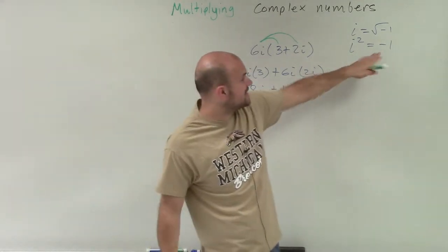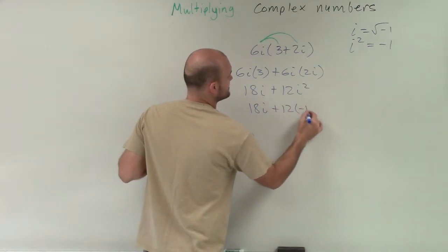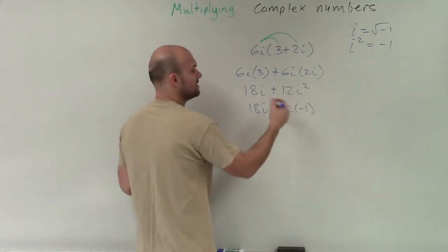Remember, we rewrite i squared as negative 1. So this is 18i plus 12 times negative 1. 12 times negative 1 is negative 12.